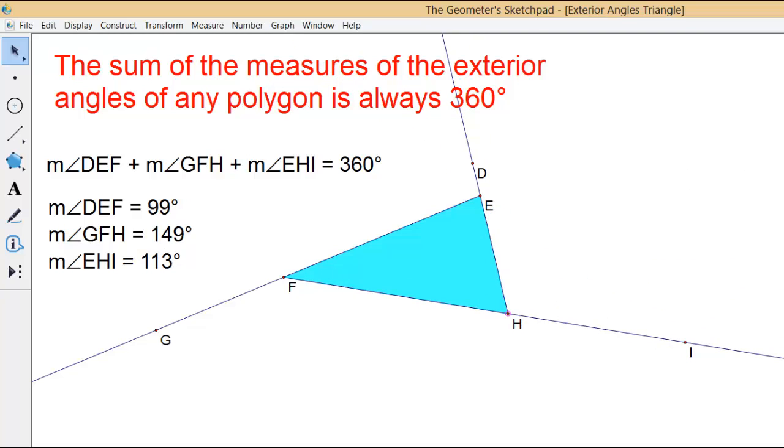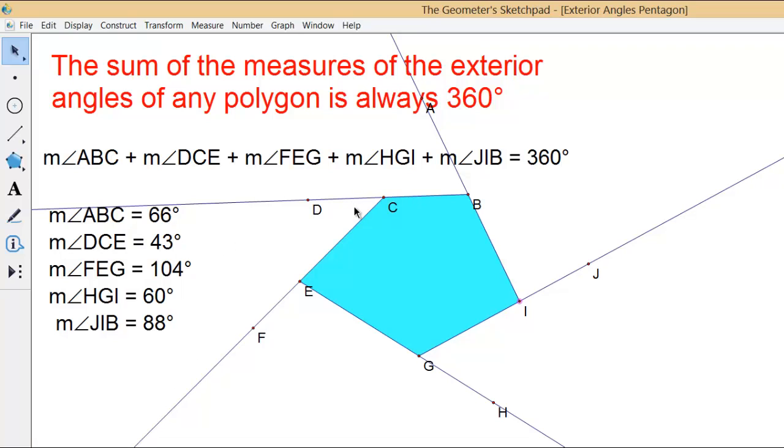Now if we look at a pentagon, again the exterior angles are measured and they are shown here, and those will change, but the sum of the measures will remain 360.